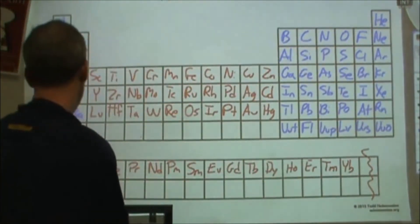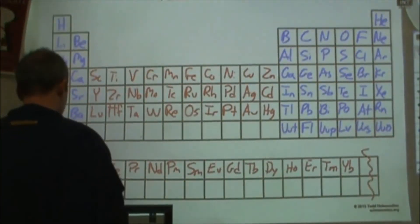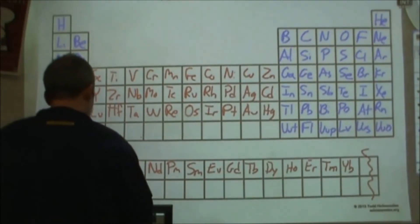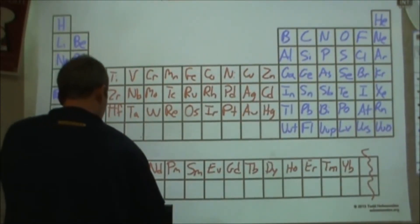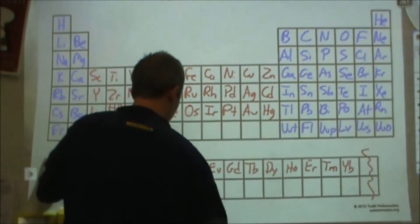And then all the way through radon, francium, radium. So here we're going to start with the actinides, actinium, thorium, protactinium, Pa, uranium, neptunium, plutonium.